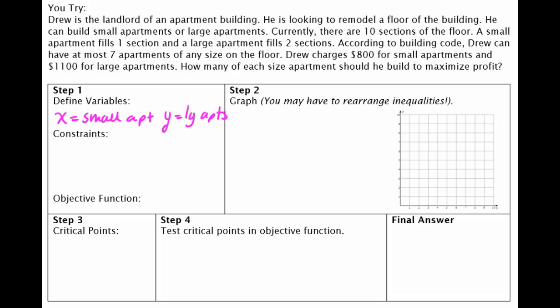You cannot have a negative apartment. So our constraints, and these are kind of like standard for every single problem. My x has to be greater than or equal to zero, and my y has to be greater than or equal to zero. So we're only talking about positive apartments, which kind of makes sense.